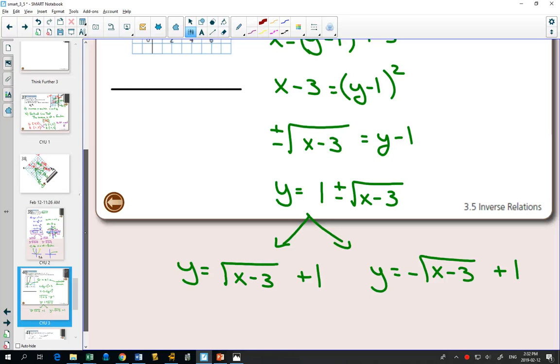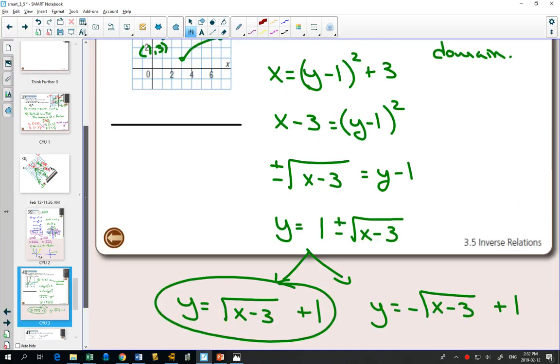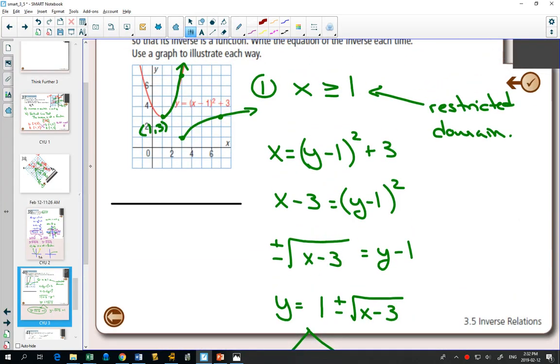No. So the equation for the first part, for the first restricted domain, is this one. And one way that you could figure out it's this one is, like I did, to actually draw the graph.